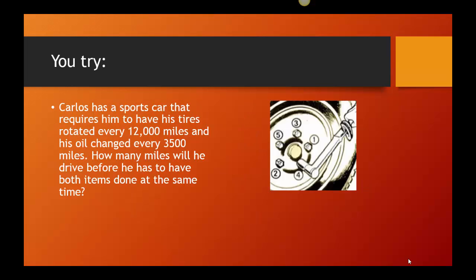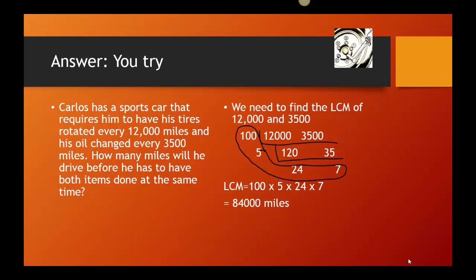All right, so try this one. Especially try to figure out how would you start this. So it says Carlos has a sports car that requires him to have his tires rotated every 12,000 miles and his oil changed every 3,500 miles. How many miles will he drive before he has to have both items done at the same time? Give yourself some time. Try to figure this one out and come back and check the answers. So again, we're finding something in the future, like time is getting elapsed. Miles are going to elapse. So we know we want to look at the LCM.